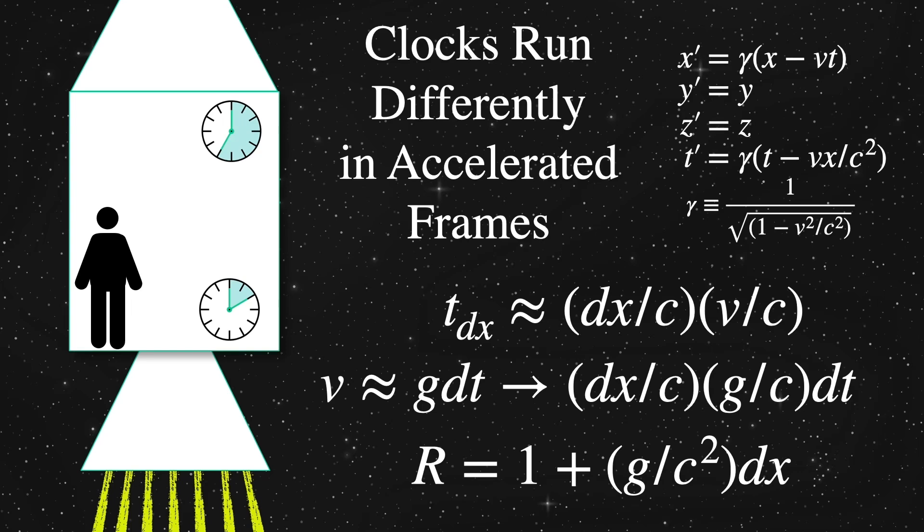Let's call up direction x in a frame moving in the x direction with a velocity v relative to some rest frame. For this rest frame, we'll use the bottom of the rocket. Now we check the clock at a nearby position upwards, dx.